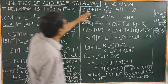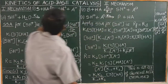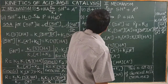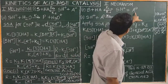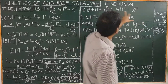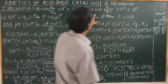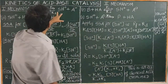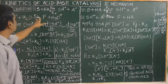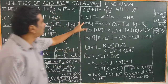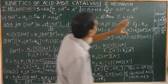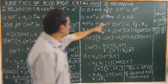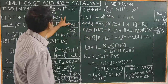In the second mechanism, the first step is the same. In the second step, SH+ reacts with the conjugate base A- to give product, with rate constant K2.